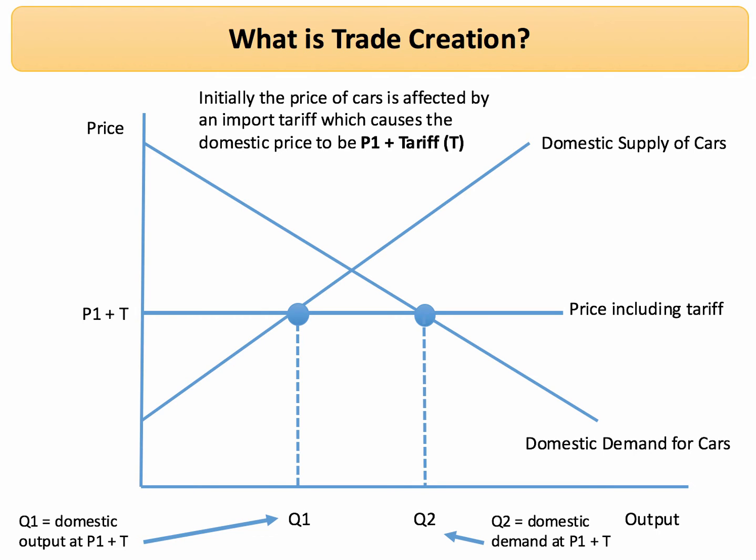So here's the analysis diagram we can use to show this. We'll take the market for cars. In the market for cars, initially there was a price P1 plus T — so this market is affected by an import tariff — which is called the domestic price. The prevailing price would be P1 plus the import tariff.